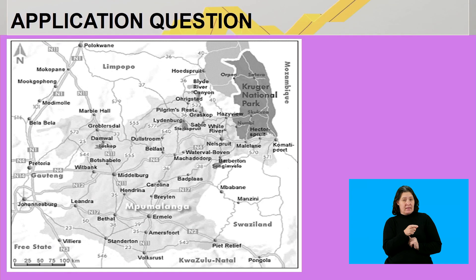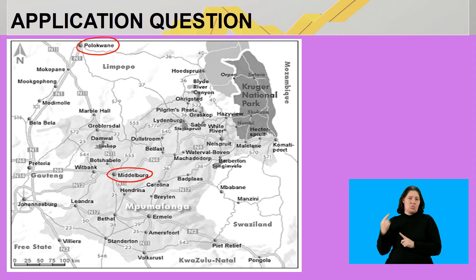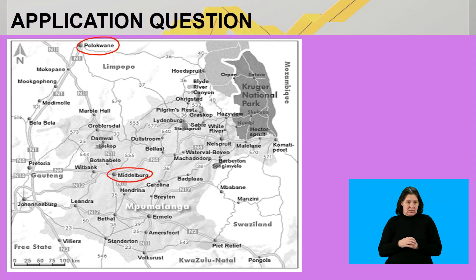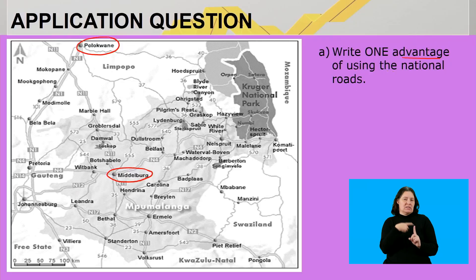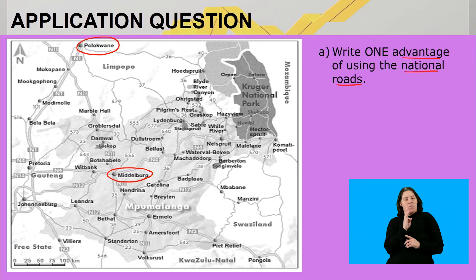Remember, we refer to the two places: Polokwane and Middelburg. Whenever you get something like this related to the question, take some time to find your bearings on the map. The first question says: write one advantage of using national roads. Now, if you look at this question, it's a level four type of question where we want you to reason and reflect.